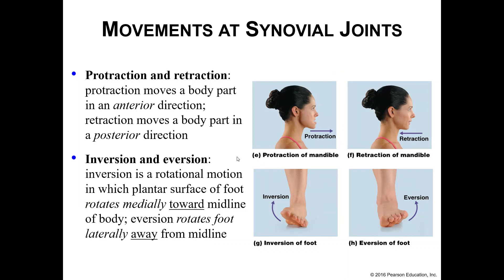Protraction and retraction: you are moving something in an anterior and posterior direction. You can stick your jaw out and bring it back in place. You can also do this with your scapula — you can bring your shoulder forward and move it backwards as well.